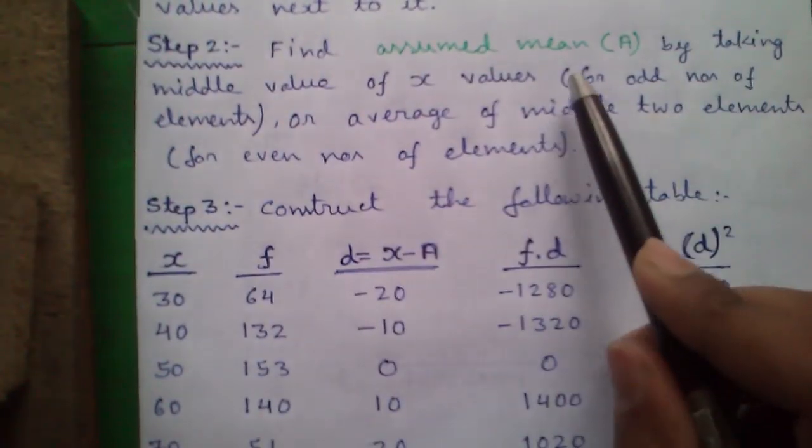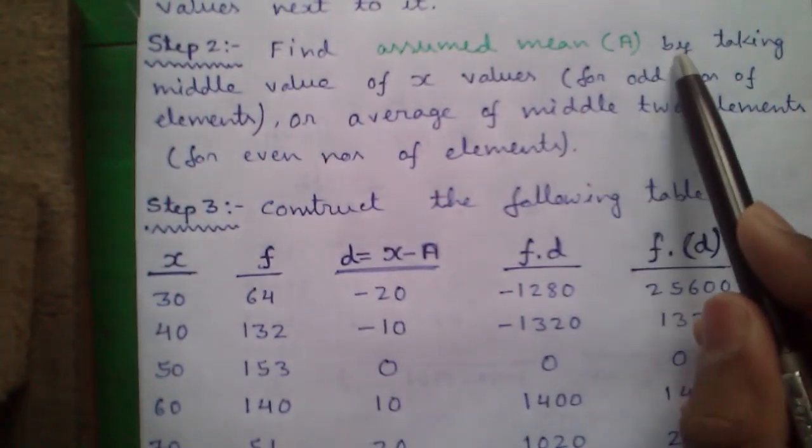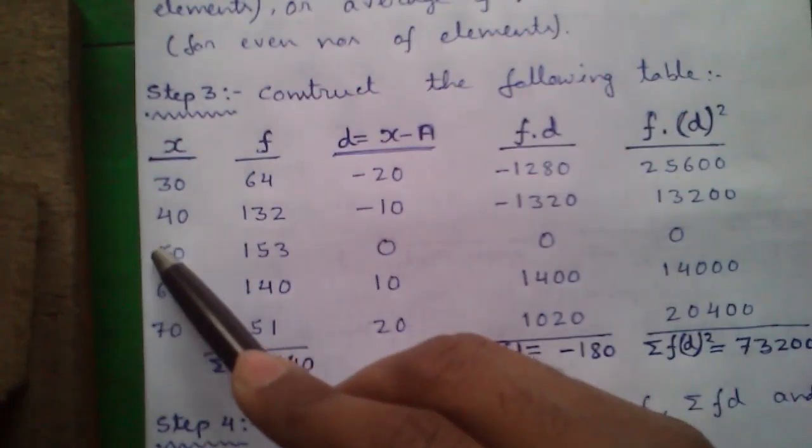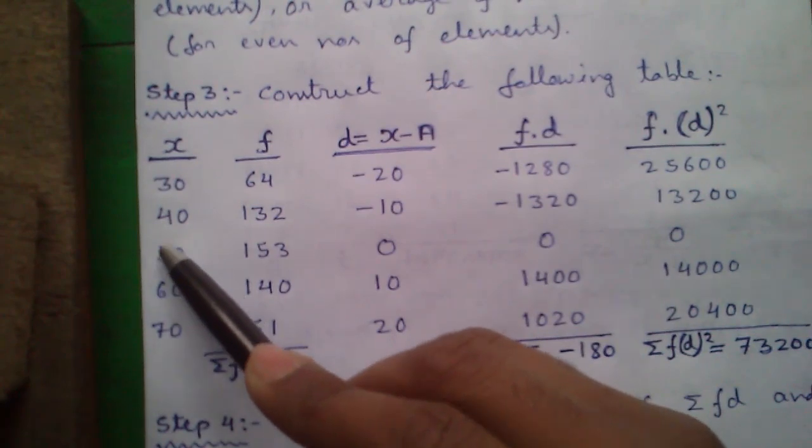Next, find assumed mean or A by taking the middle value of X values. Here the middle value is 50, so our assumed mean is 50.